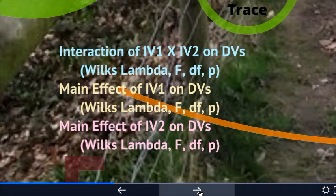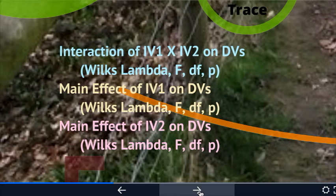It gets a little more complex when you have two or more independent variables, which is quite common when running a MANOVA. Just like in a two-way ANOVA, you're going to have interaction effects and main effects. For a MANOVA with two independent variables, you'll first look at the interaction of your two IVs on all of your DVs — with a Wilkes Lambda, F-value, degrees of freedom, and p-value for that interaction. Then you'll pull out the main effect of each IV on your DVs, each with its own Wilkes Lambda, F, df, and p-value.